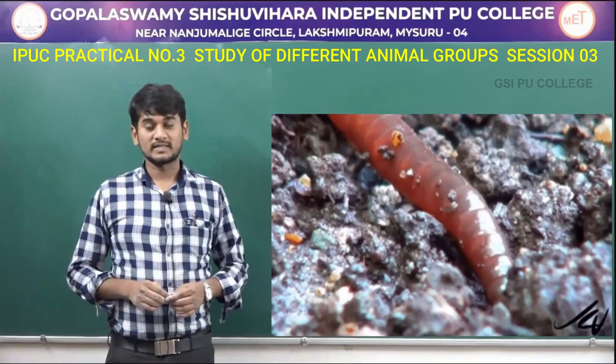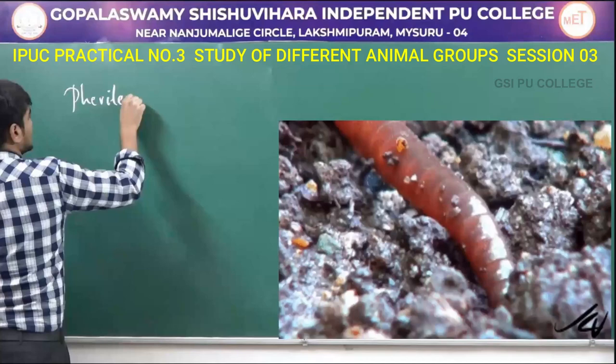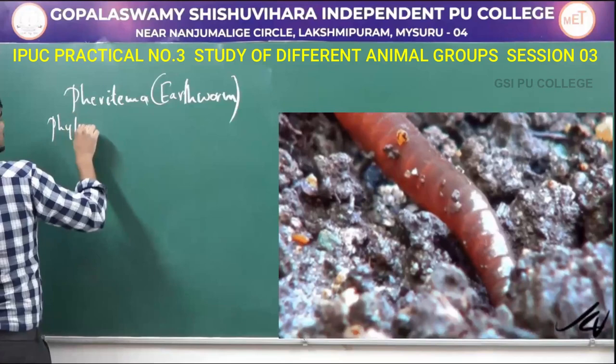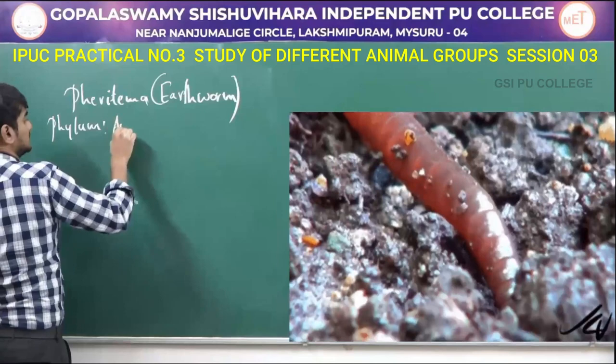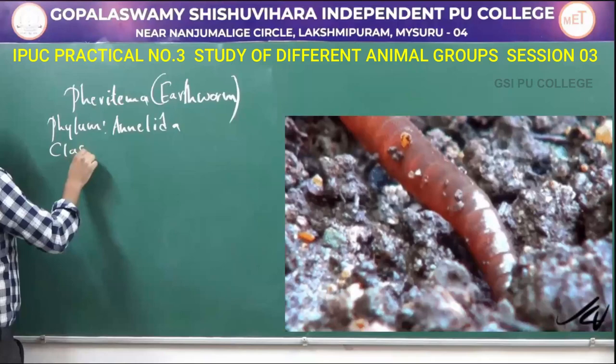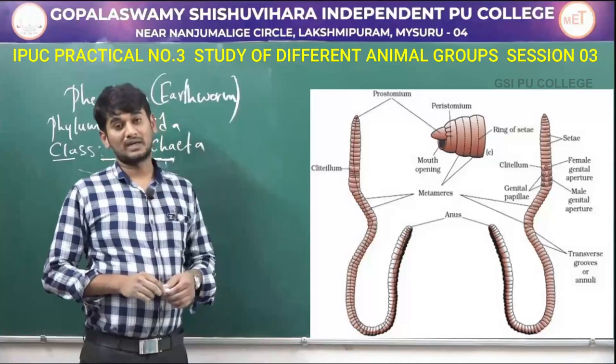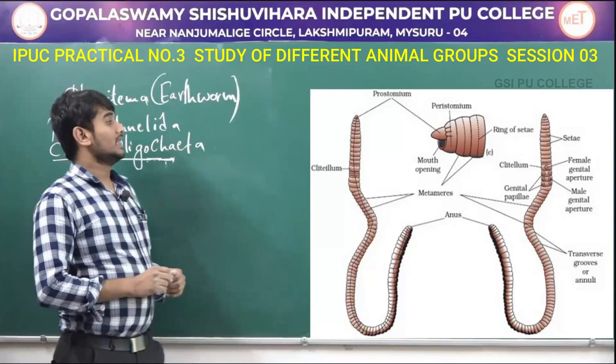The next one is Pheretima, commonly called as earthworm, friends of farmers. Earthworm comes under the phylum Annelida and class Oligochaeta. In the right side we can observe the picture of Pheretima, commonly called as earthworm. The body is cylindrical, elongated, and metamerically segmented.